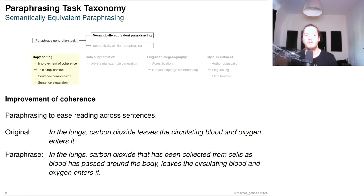The improvement of coherence is a common copy editing task in which a text is paraphrased to ease reading across sentences. Due to size limitations, the example demonstrates a paraphrased original to achieve better text flow in a single sentence instead of across multiple sentences.